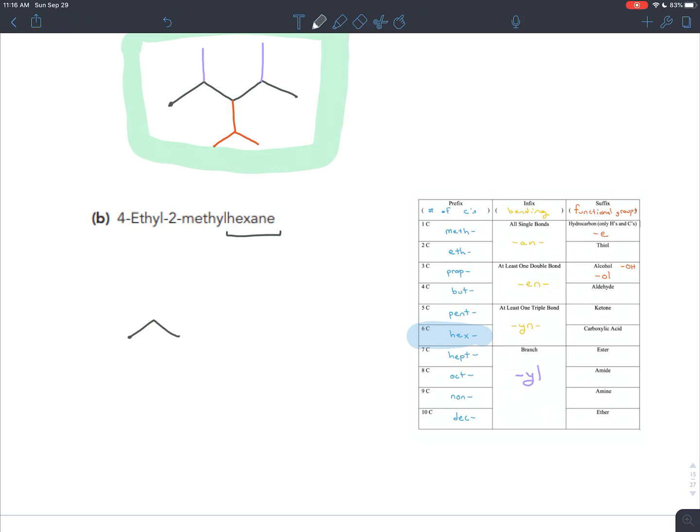So our parent chain here is hexane. The prefix is hex. So we're going to be drawing six carbons. Start with a dot. So one, two, three, four, five, six. The infix here is an. That means that we have all single bonds. And then we don't have to worry about drawing any other elements in because our suffix is e. That means we have a hydrocarbon. So just hydrogen and carbon.